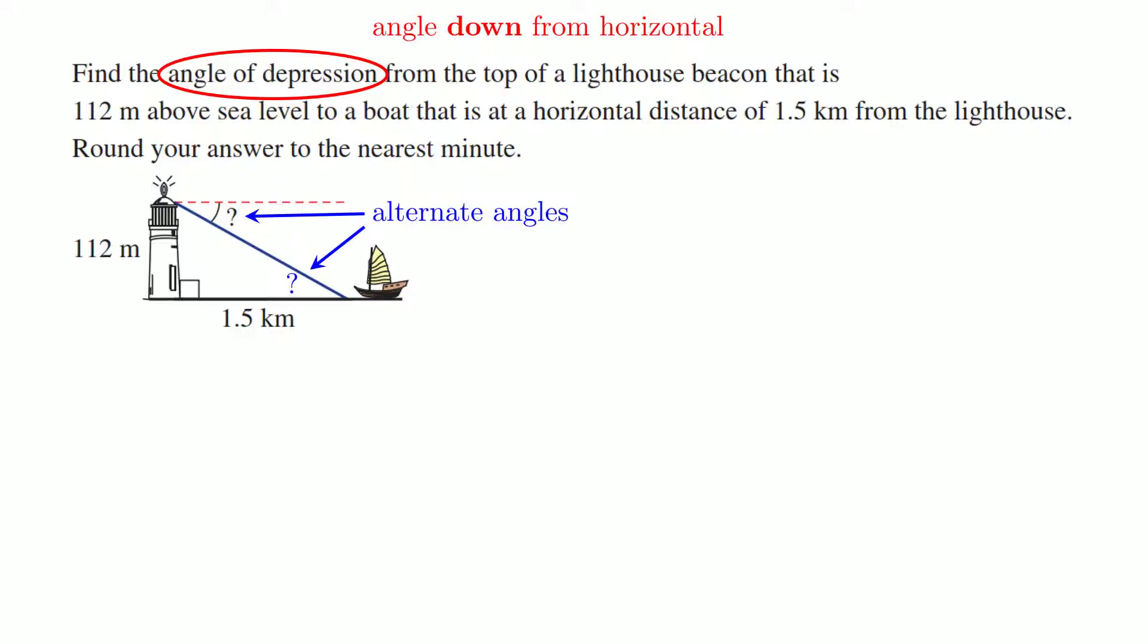So there's my blue question mark there. With that angle in mind, there's my hypotenuse, opposite, and adjacent. This time I'm using the opposite, the 112, and the adjacent, the 1.5 kilometers. Just be careful for units. So O and A, that's a tan. Tan takes the angle. So this time tan is taking the question mark. Tan's taking the unknown. What it gives us is opposite over adjacent. That's 112 over 1,500, if I want to keep the units consistent.